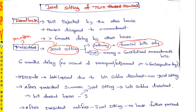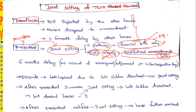In examinations, they may give statements about when a deadlock arises; you must say which is right and which is wrong. Joint sitting is possible for ordinary bills and financial bills type one and type two only. There is no joint sitting for a money bill or a constitutional amendment bill. For money bill, Lok Sabha has sole responsibility, and a constitutional amendment bill must be passed in two houses separately.